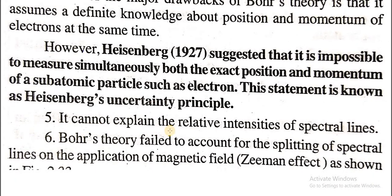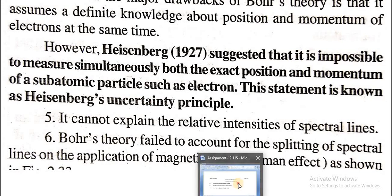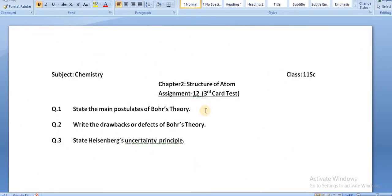Fifth, Bohr's model cannot explain the relative intensities of spectral lines. Sixth, Bohr's theory failed to account for the splitting of spectral lines on the application of a magnetic field — the Zeeman effect. I've already mentioned the questions for today's assignment, so complete the assignment and send it to my email. See you later, take care!